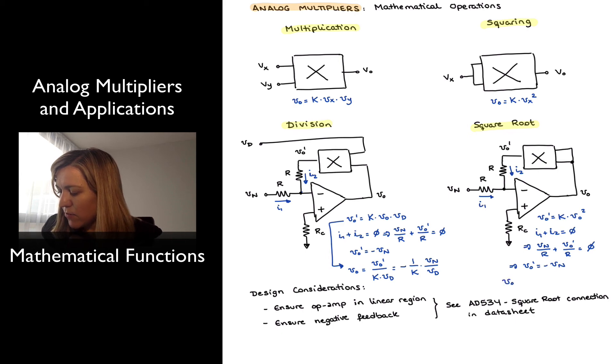And then I have, I can solve for my output voltage from the original equation. I have that vout is equal to the square root of vout prime divided by k.